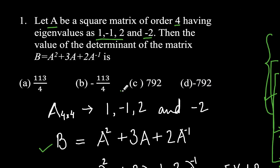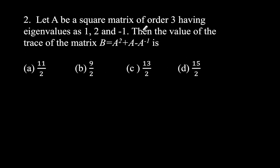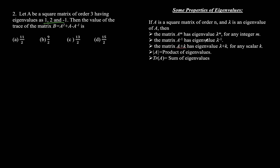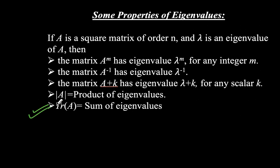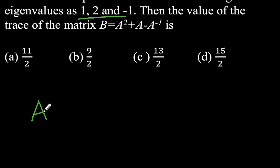Let's move to the next question. Suppose we have a square matrix A of order 3 with eigenvalues 1, 2, and -1. The value of the trace of matrix B = A² + A - A⁻¹ is asked, with four options to choose from. Again, we will use the properties of eigenvalues — first calculating the eigenvalues of B, then using the trace property.